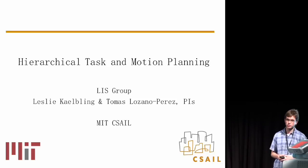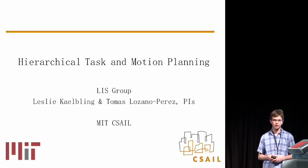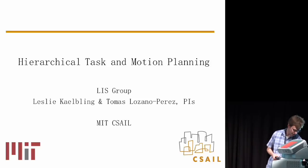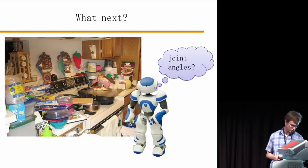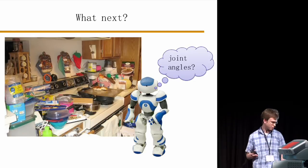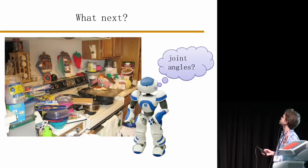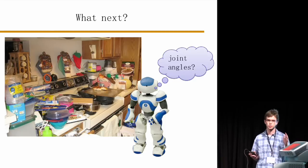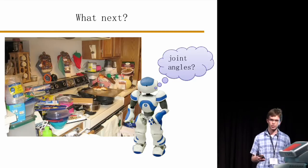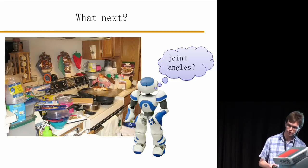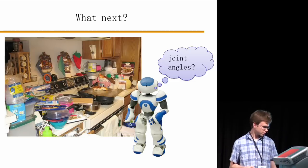One of the things that we're going to be doing with the PR2 is hierarchical task and motion planning. Basically what that means is you've got this complicated environment, you want to accomplish some high level tasks, and you don't want to have to reason about joint angles directly. You want to do things at a higher level first and then later on translate that into lower level actions.